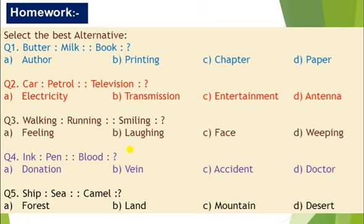Question number three: Walking, Running, Smiling. Walking, you are walking, but running is the fast version of walking. When you are smiling, what is the fast version? Feeling, laughing, face, or weeping?